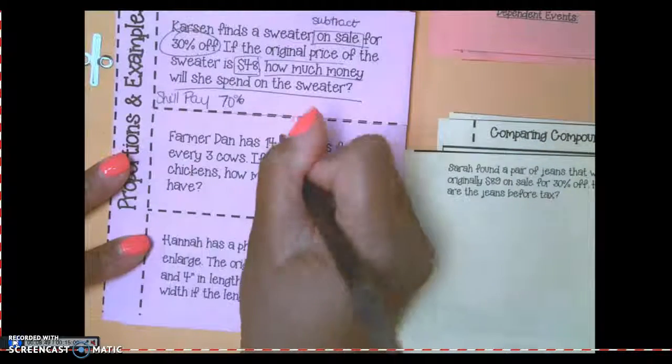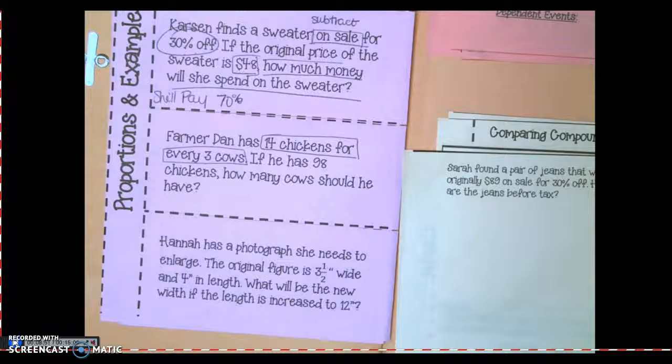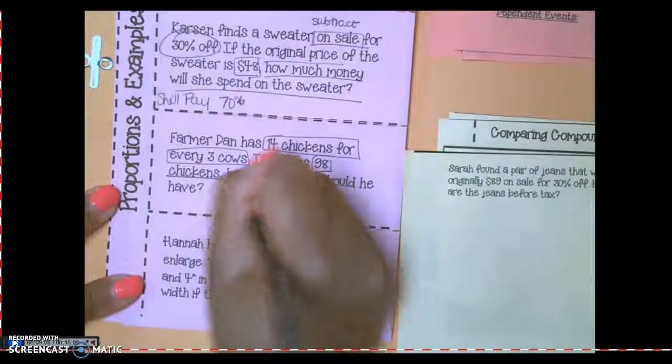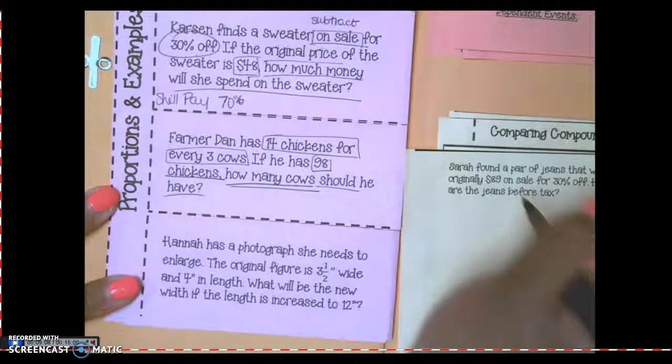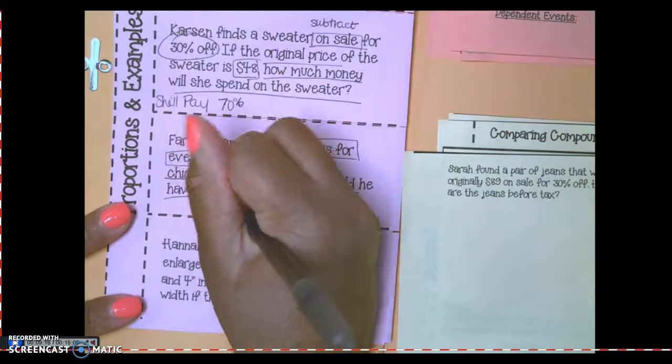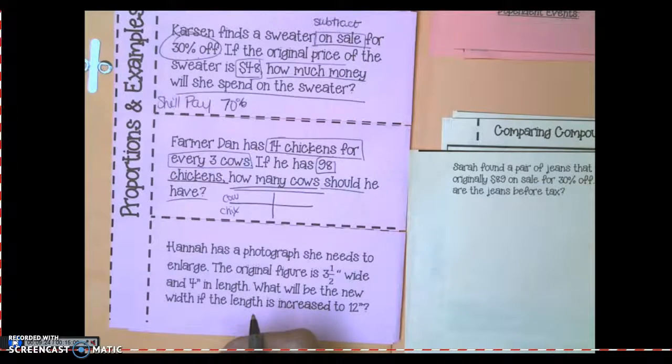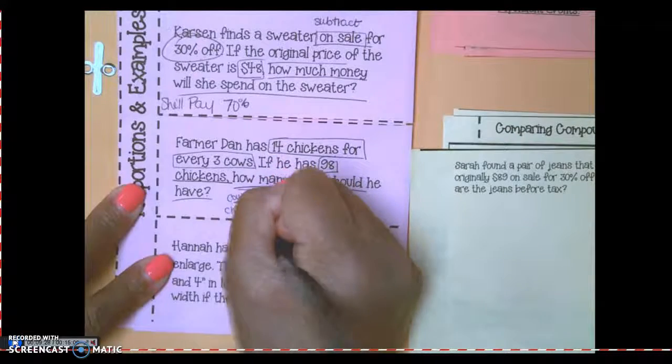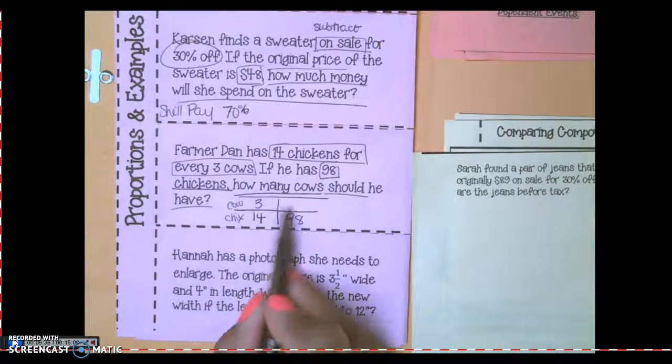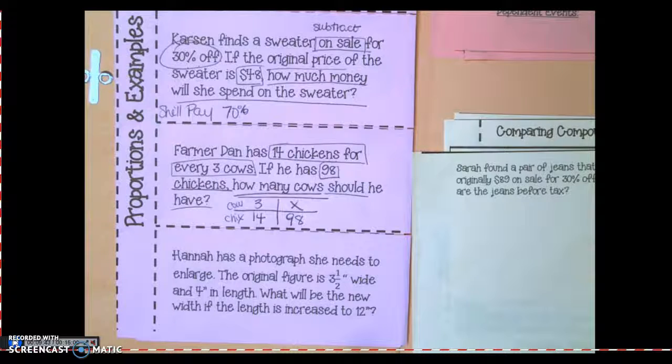Farmer Dan has 14 chickens for every. What kind of words are those? What words tell me that it's a ratio? For every. If he has 98 chickens, how many cows should he have? What do I need to make? What are the things that I have? Cows and chickens. How many cows? Three for every 14, so three out of 14. And what else did they give me? 98, what? So I have to put the 98 with the chickens, and what goes here? X. Cross multiply and divide to solve.